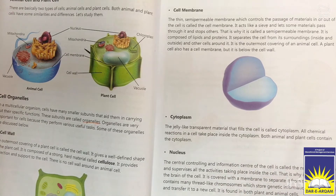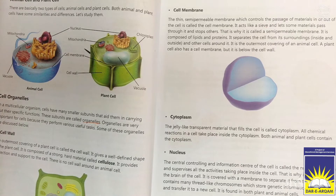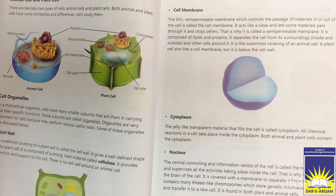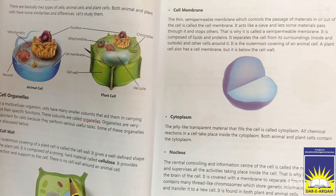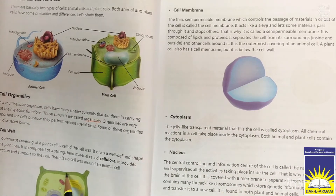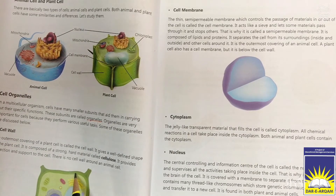The cell membrane is located in plant cells inside the cell wall. This is the cell wall, and inside it is the cell membrane.